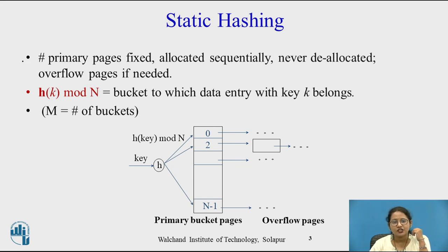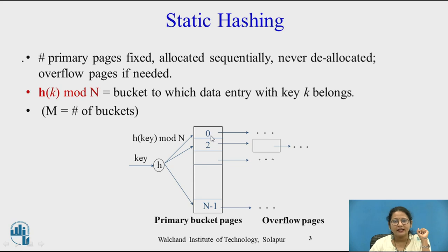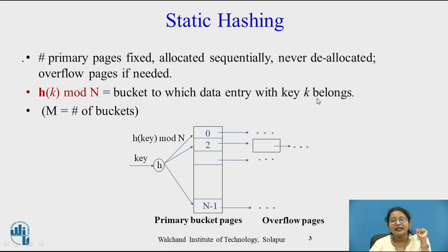What are the characteristics of static hashing? First, primary pages are fixed, allocated sequentially, never de-allocated, and overflow pages are used if needed. The hash of a key value mod n, where n is the number of buckets, gives the bucket to which a data entry with key k belongs. This formula is used to find the address of a data record with search key k. m is the number of hash buckets.